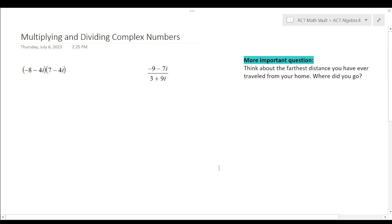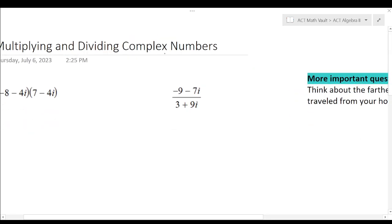One of the standards explicitly for the ACT is, can you multiply complex numbers? And I do have a video on simplifying, adding, and subtracting complex numbers. A complex number is just a number in the form a plus bi, where a is the real part of that number, and bi is the imaginary part.